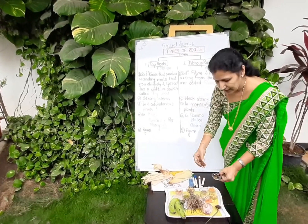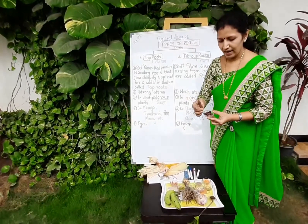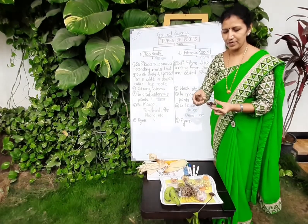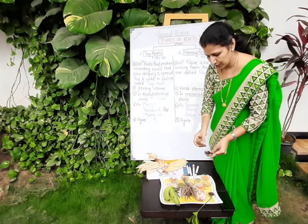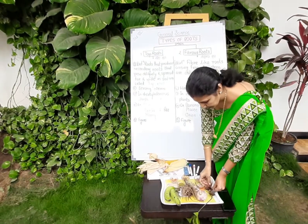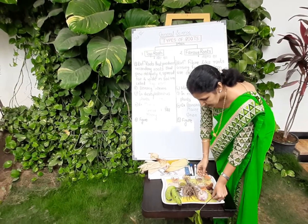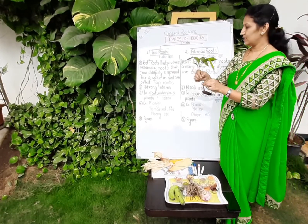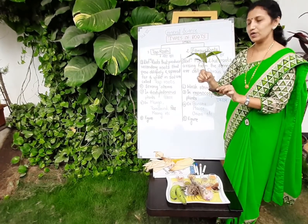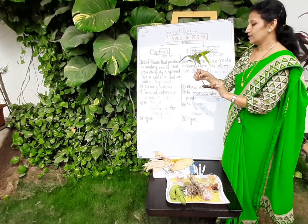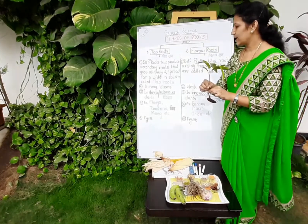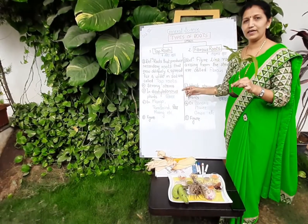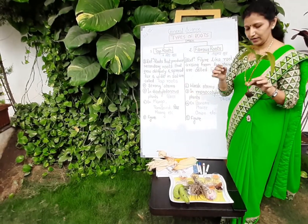Tamarind — the seeds of tamarind can be divided into two parts. See, this is a mango plant, and this mango plant is also having tap roots. It has a strong stem and it grows very tall.